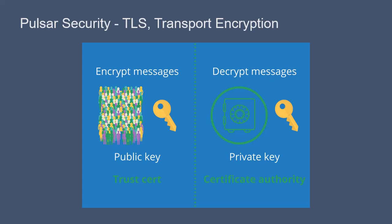TLS is an abbreviation for Transport Layer Security, and it is a form of cryptography. It uses both a public key to encrypt messages and a private key to decrypt them. There are three types of these public-private key pairs. For TLS encryption, you need both a certificate authority and a server key pair. For client authentication, there is a third requirement for a client key pair.